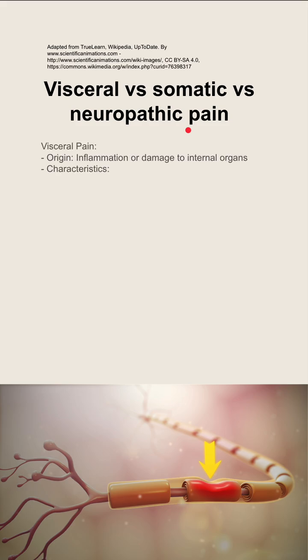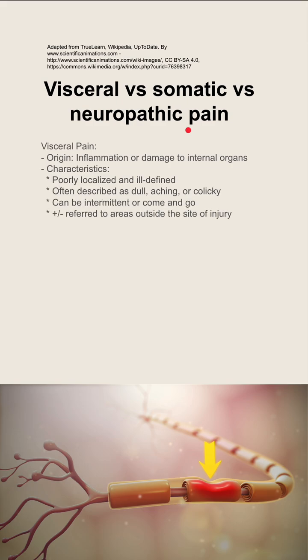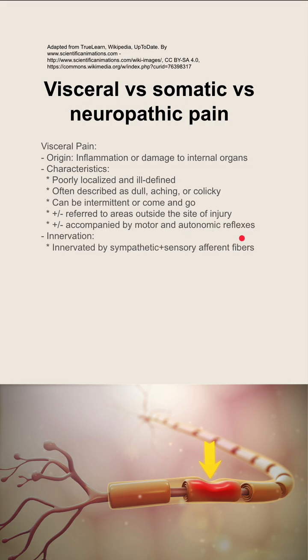Visceral pain has an origin in the internal organs. It can be caused by inflammation or damage to the internal organs. It's usually poorly localized and poorly defined. It's often described as dull, aching, or colicky, and it can be intermittent or come and go. It might have referred areas outside the site of injury, and it might be accompanied by motor and autonomic reflexes.